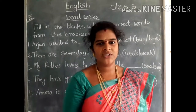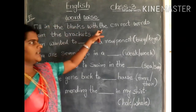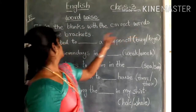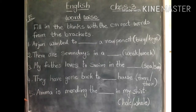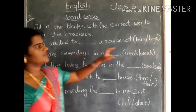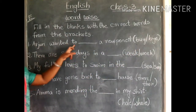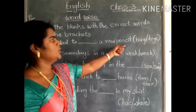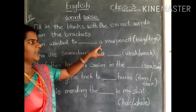Here you see the next exercise: 'Word by Word Mind.' Fill in the blanks with the correct words from the brackets. Here we have some sentences with blanks. You have to fill these blanks with the words from the brackets. First one: Arjun wanted to dash a new pencil. Arjun wanted to buy a new pencil.